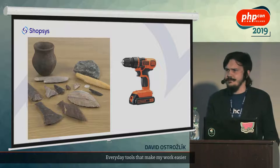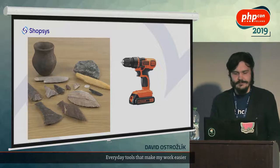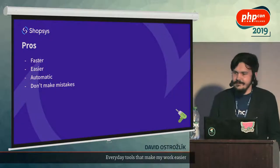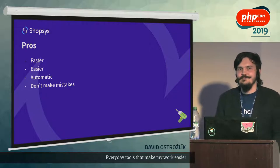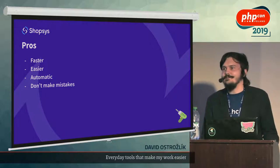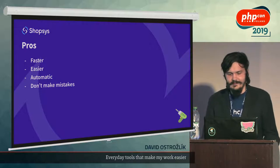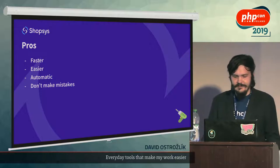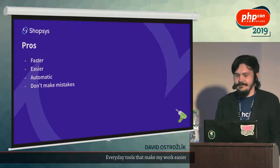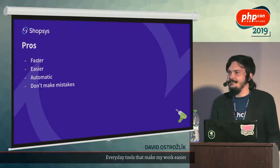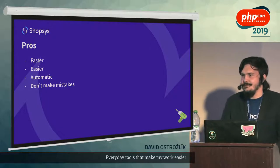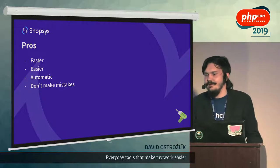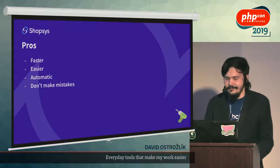And why do people tend to use tools? It's mainly because they are faster, it's easier to do some tasks with them, because you cannot change a tire in a car without some tool. And most importantly, it could be automated and it doesn't make mistakes. Like, if you have a wrench, it will not be a mistake, but somebody who does it with a hand, they can screw up.